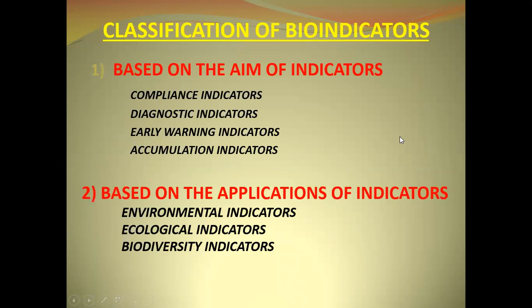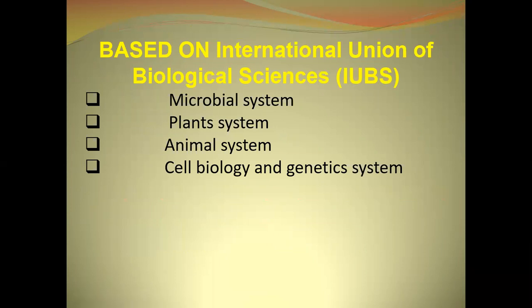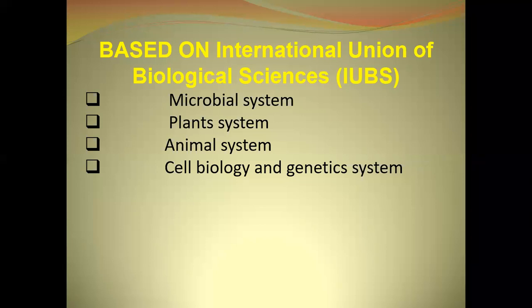There are three types of classification. One is based on the aim of the indicator — compliance indicator, diagnosis indicator, early warning indicator, and accumulation indicator. Based on application, they are environmental indicator, ecological indicator, and biodiversity indicator. The main classification given by the International Union of Biological Science — IUBS — is: microbial indicator, plant indicator, animal indicator, and cell biology and genetics indicator.